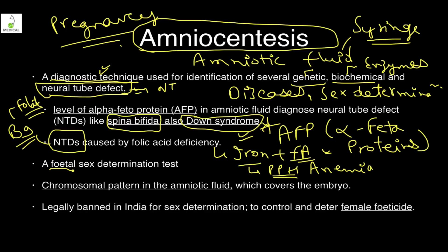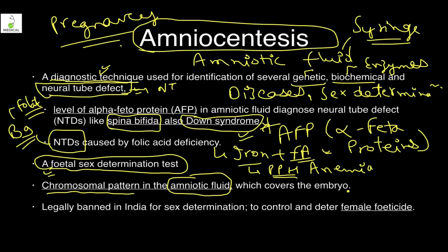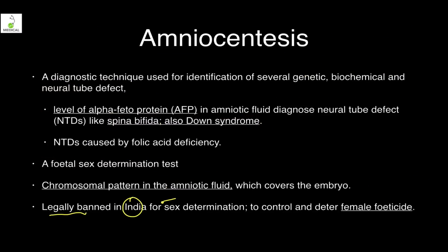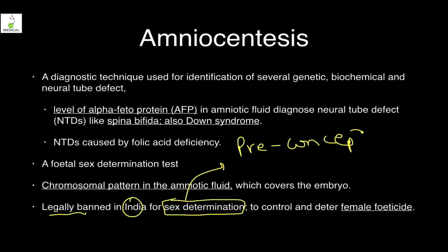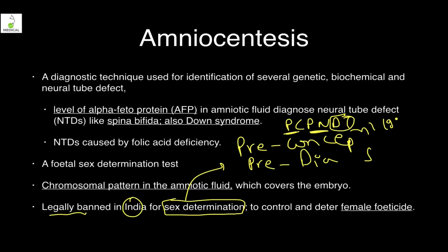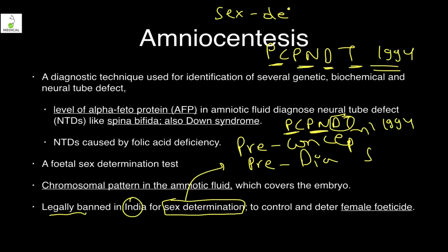In India, amniocentesis is mostly used for fetal sex determination. By analyzing chromosomal pattern — if it is XX it is a female child; if XY it is a male child. It is legally banned in India for sex determination use by the PCPNDT Act — the Pre-Conception and Pre-Natal Diagnostic Techniques Act of 1994, which bans any method of sex determination either before or after conception, to control and deter female feticide.